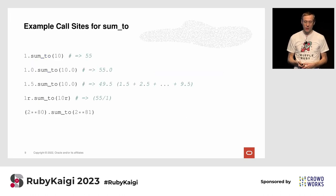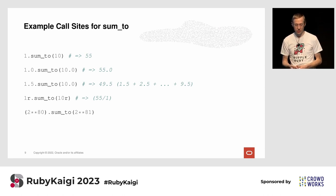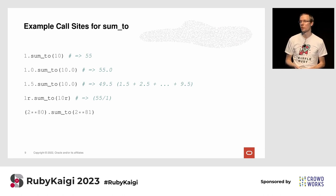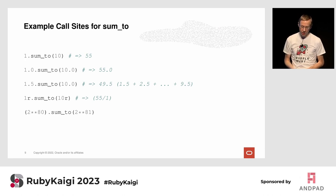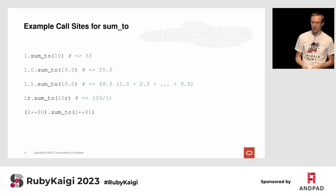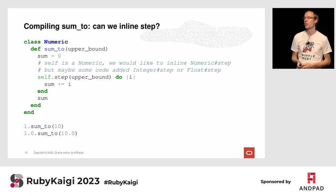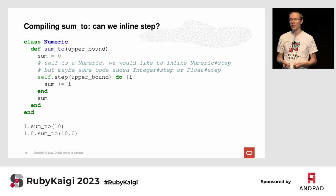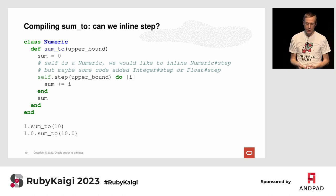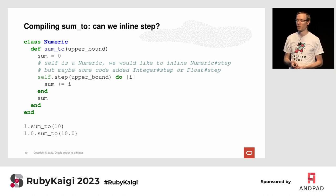For example call sites, we can call sum_to from 1 to 10, but we can also use floating points, Rational, or Bignums — so we can use it in various different ways. What we're going to look at is how we can just-in-time compile numeric#sum_to to machine code efficiently.